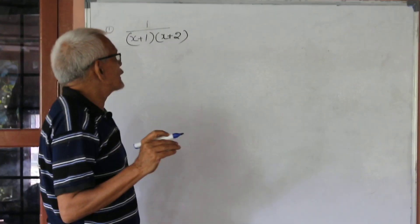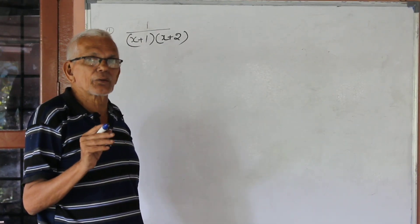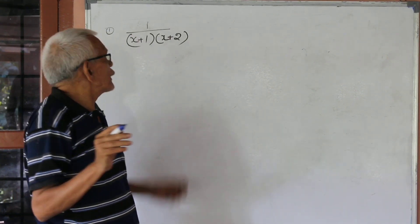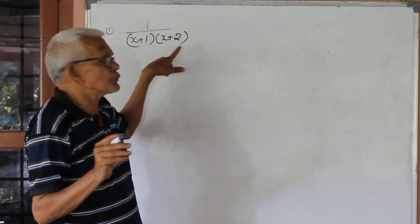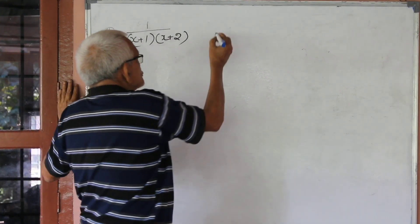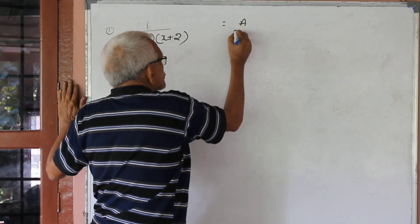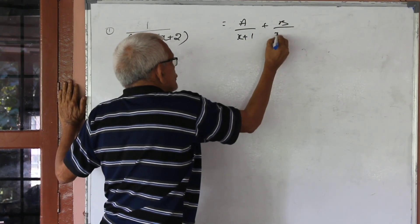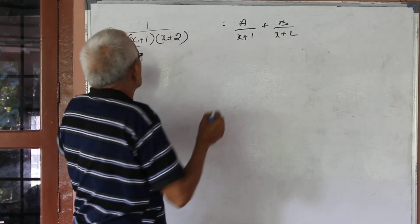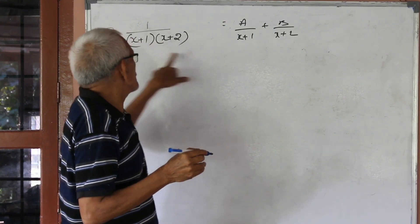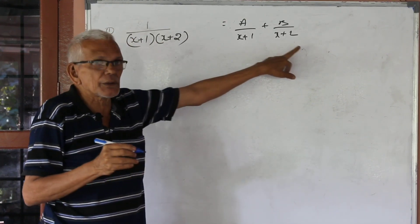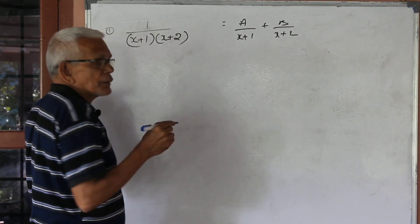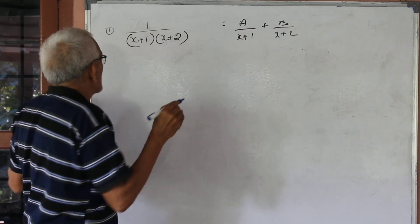In this Partial Fraction, one and two problems will be done. The problem is 1 by (x+1)(x+2). The sum is A by (x+1) plus B by (x+2). Multiply by the denominator of LHS.